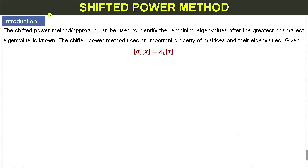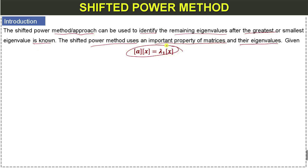Introduction to the shifted power method. The shifted power method is an approach that can be used to identify or find the remaining eigenvalues after the largest or smallest eigenvalue is known. The shifted power method uses an important property of matrices and their eigenvalues: when we multiply the matrix with a vector, this gives us an eigenvalue and the corresponding eigenvector.